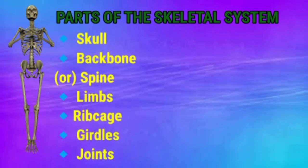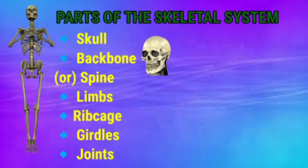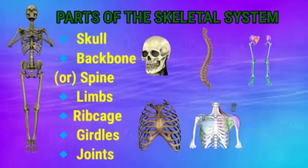Name the parts of the skeletal system. The main parts of the skeletal system are the skull, backbone or spine, limbs, ribcage, girdles, and joints. Okay children, in the next class we will discuss about the different parts of the skeletal system.